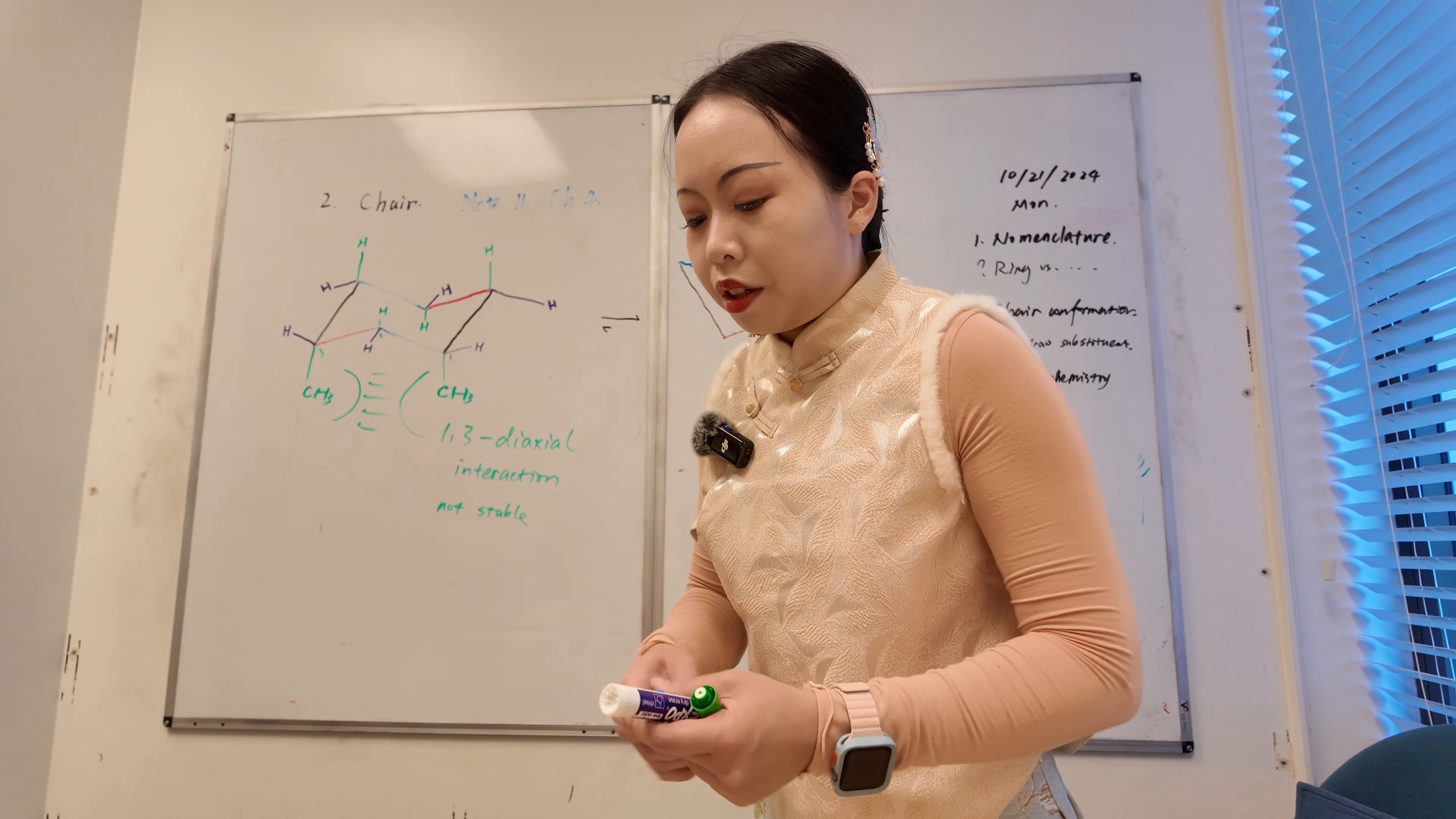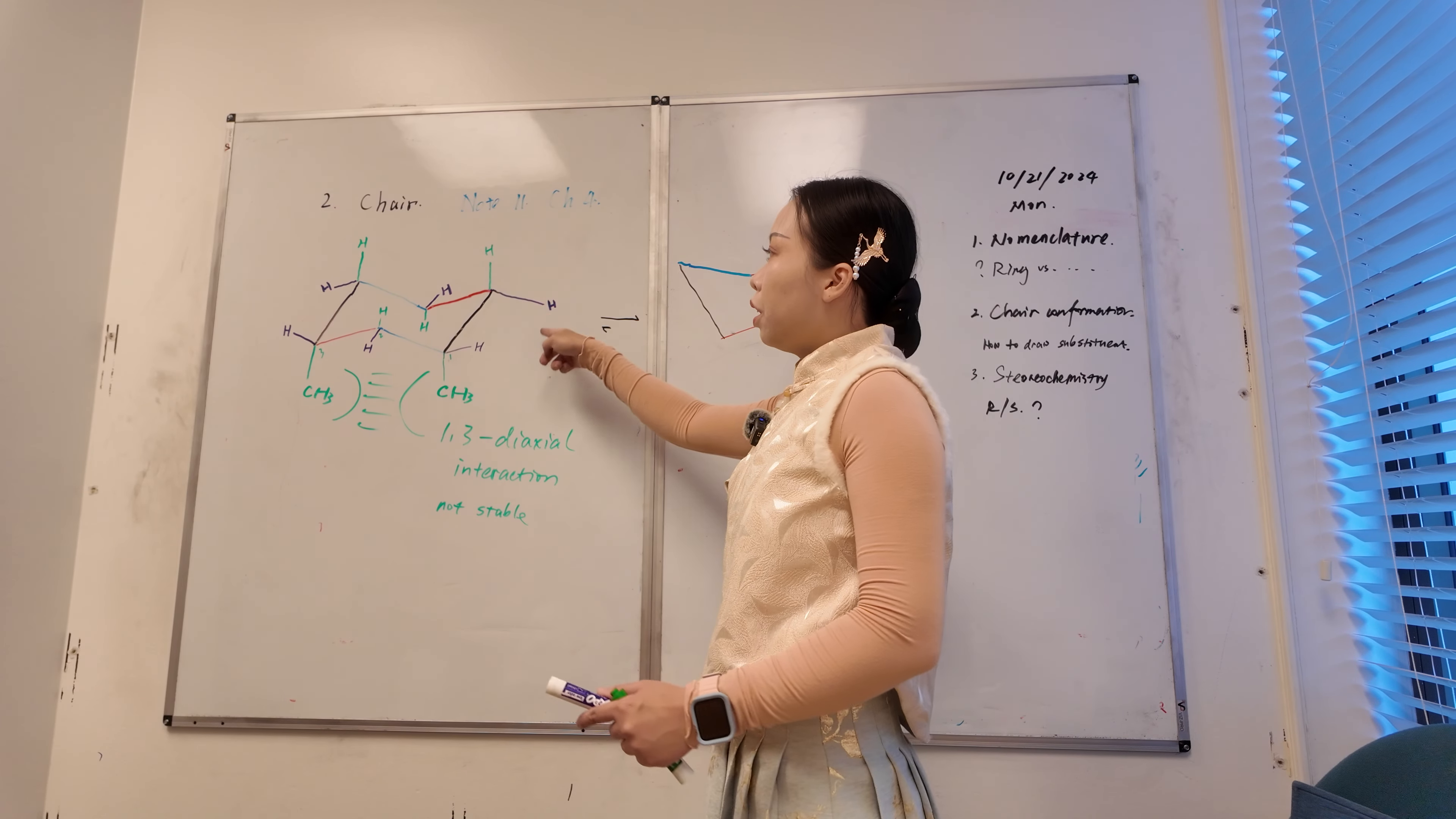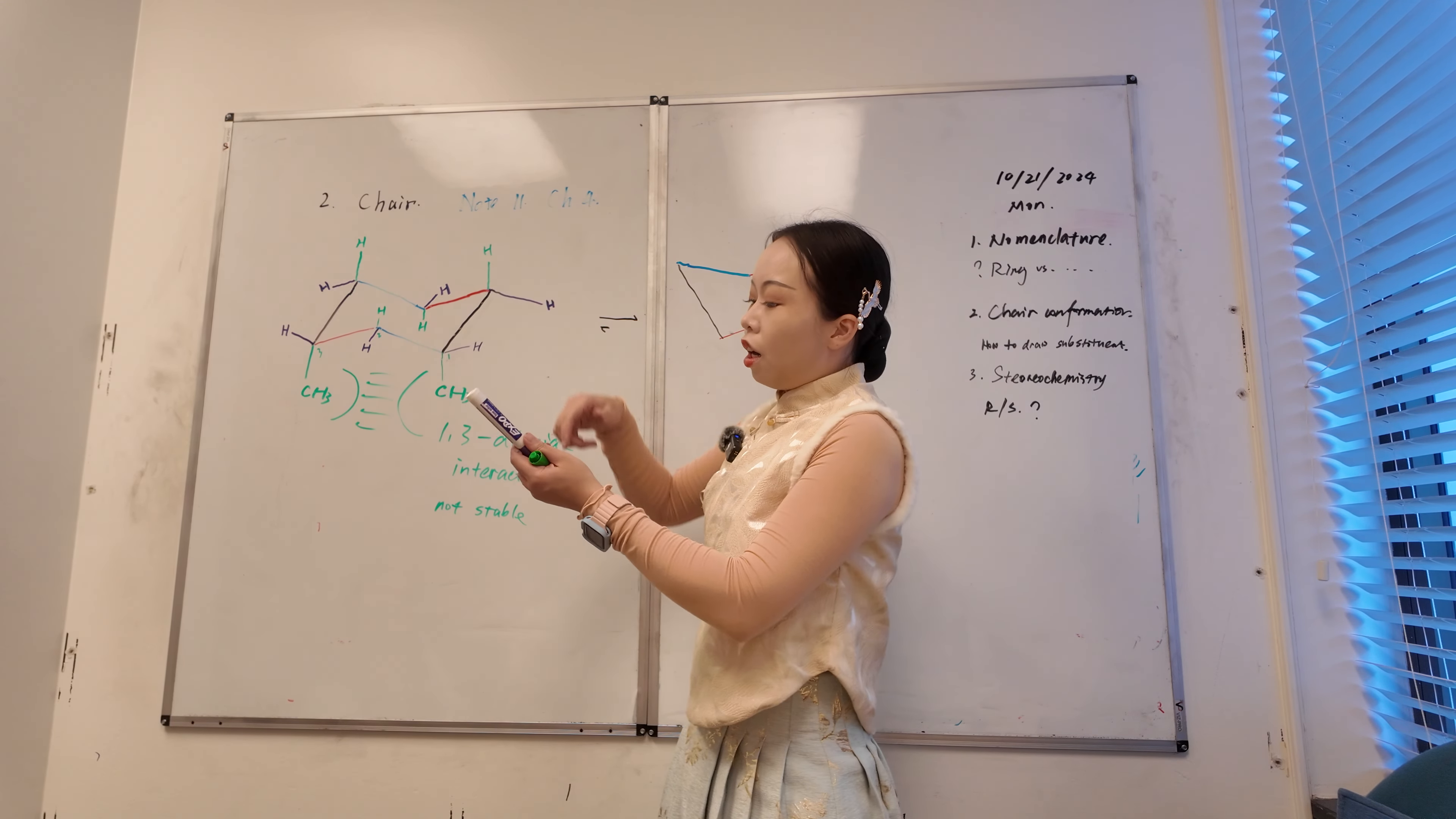So we also learned one thing, that's when you do ring flip, all your equatorial will become axial, right? Which means we'll keep consistent with this purple, which is this one here. We'll just make them into, so here all the...